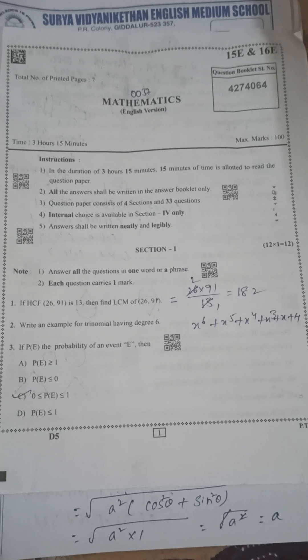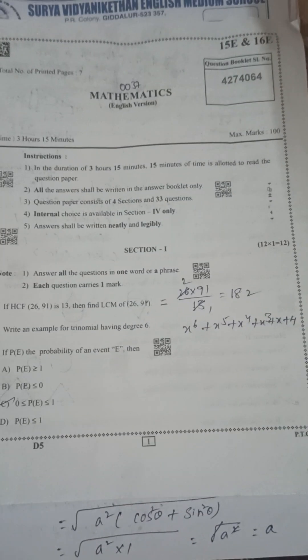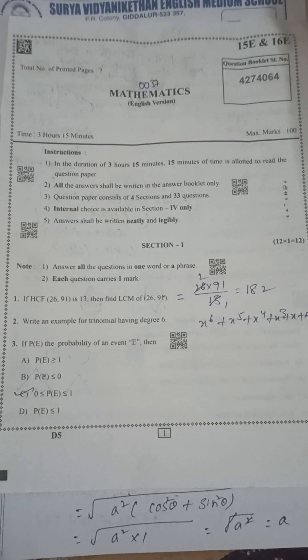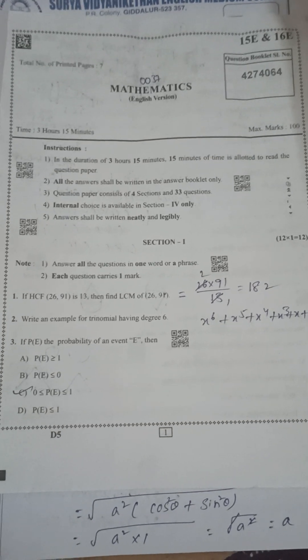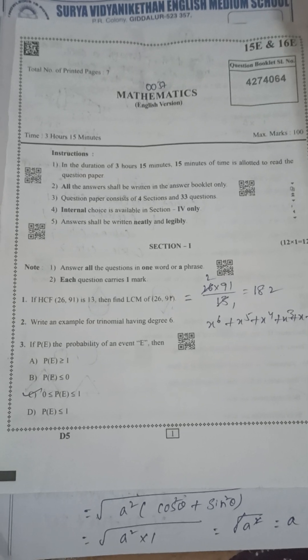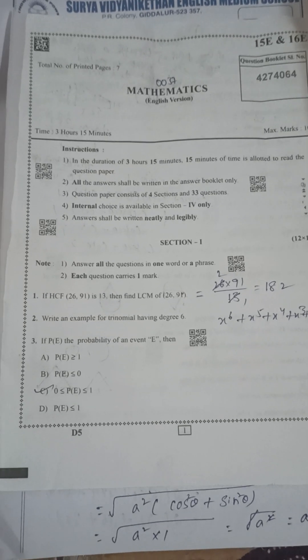So here a formula is the product of two numbers is equal to product of their HCF and LCM. So you got two numbers which is 26 and 91. HCF is 13. LCM is 26 into 91 by 13 is equal to 182.